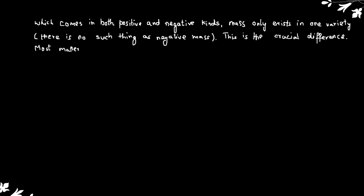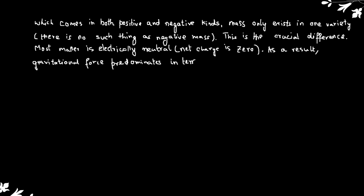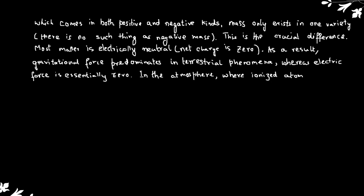Most matter is electrically neutral. Net charge is zero. As a result, gravitational force predominates in terrestrial phenomena, whereas electric force is essentially zero. In the atmosphere, where ionized atoms appear, electric force results in lightning.